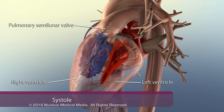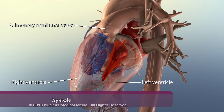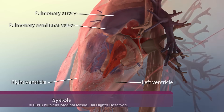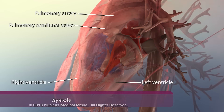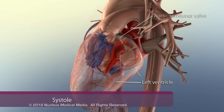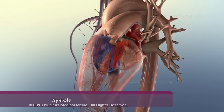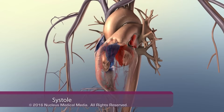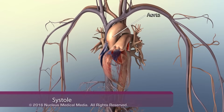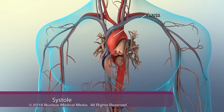The pulmonary semilunar valve opens and the right ventricle expels blood into the pulmonary arteries to the lungs. Likewise, the aortic semilunar valve opens and the left ventricle expels blood into the aorta and out to the rest of the body.